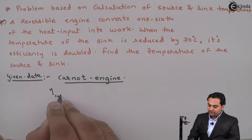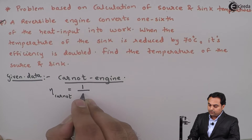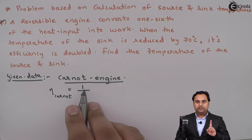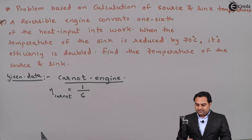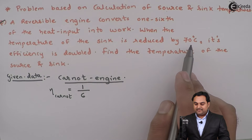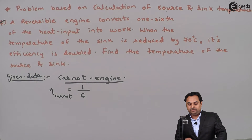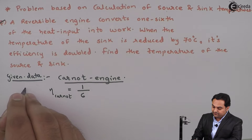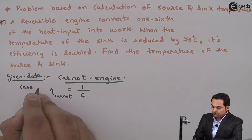I'll write down: efficiency of Carnot cycle or Carnot engine is equal to one upon six. It means six is the amount of input and one we are getting as the output. When the temperature of the sink is reduced by 70 degrees Celsius its efficiency is doubled. I'll write down this as Case Number 1.